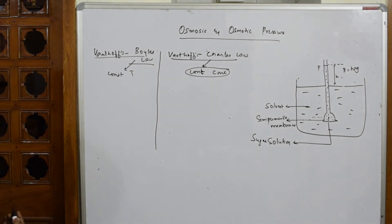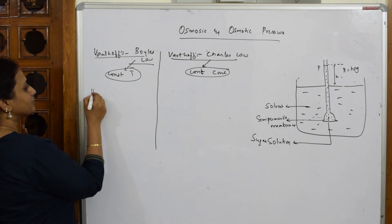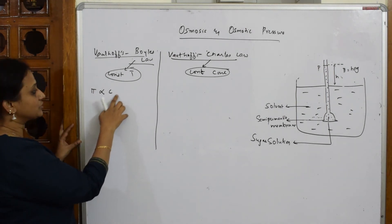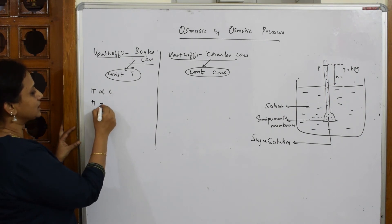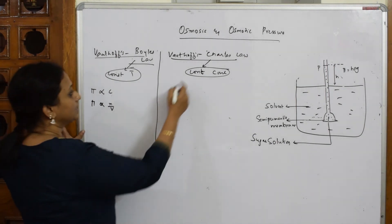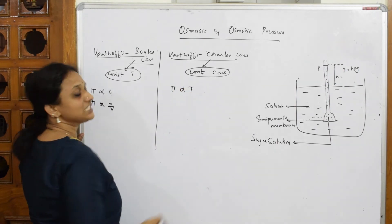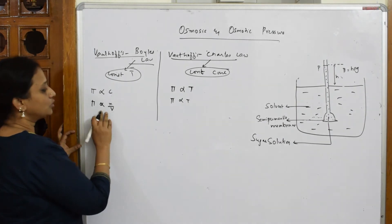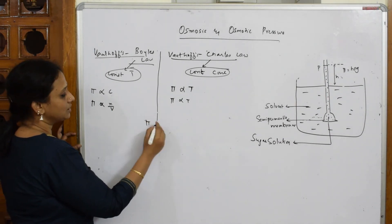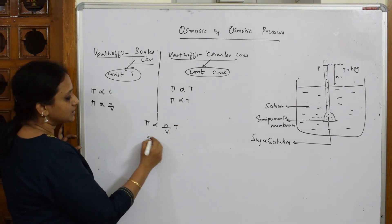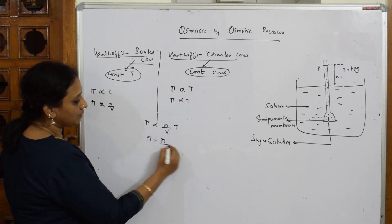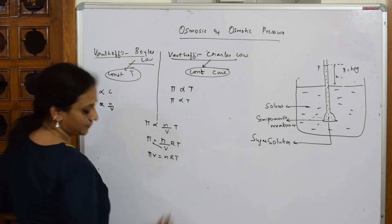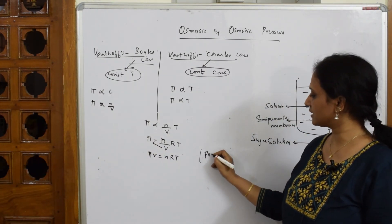When temperature T is constant, pi is directly proportional to concentration C, which is number of moles of solute divided by volume — so pi is proportional to N over V. When concentration is constant, pi is directly proportional to T. Combining both: pi is directly proportional to N times T over V. Removing the proportionality, pi equals (N/V) times R times T. Rearranging: pi V equals N R T, which looks just like the ideal gas equation PV = nRT.